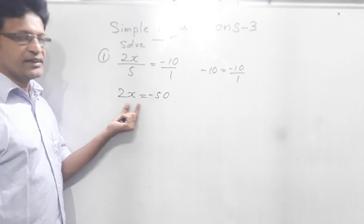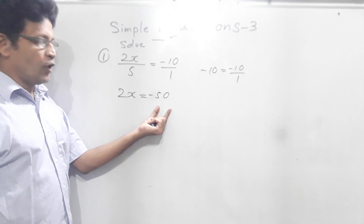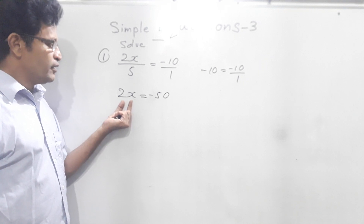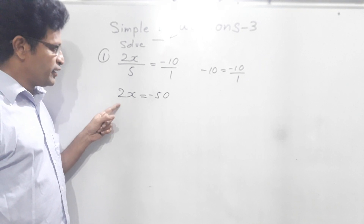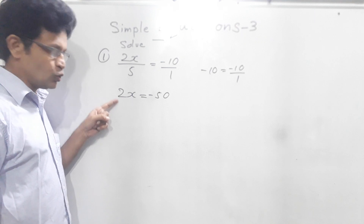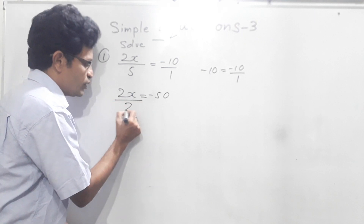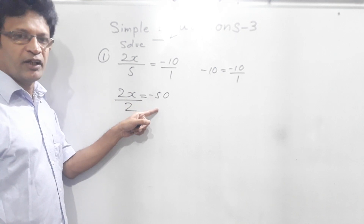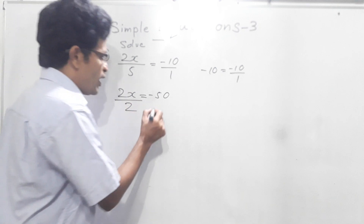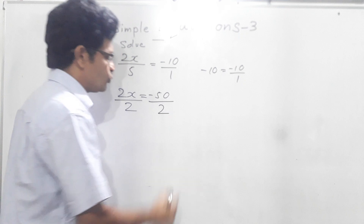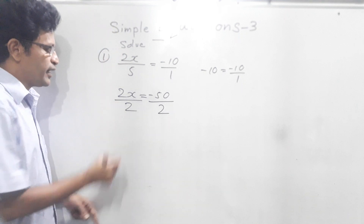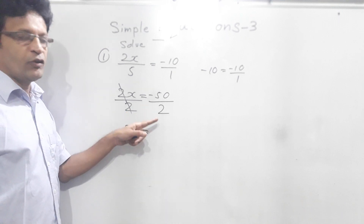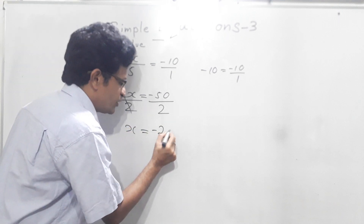Now we get 2x equal minus 50. Now we have to find the value of x. The problem on this side is this 2, so we have to get rid of this 2. To get rid of this 2, I divide this side by 2. Then the other side also I must divide by 2. So therefore, minus 50 also I have to divide by 2. Now 2 and 2 cancel. This side you have x equal minus 50 over 2, which means minus 25.